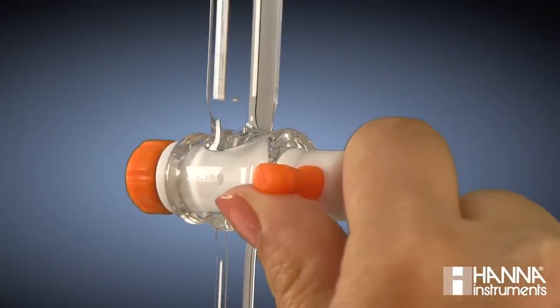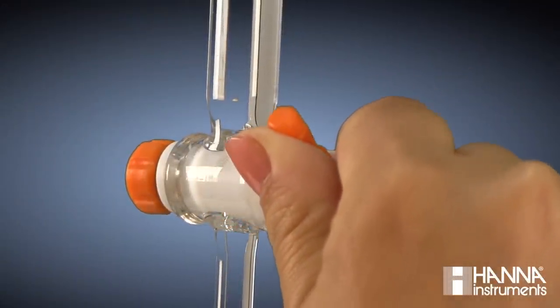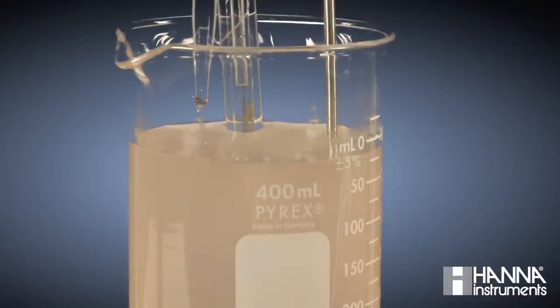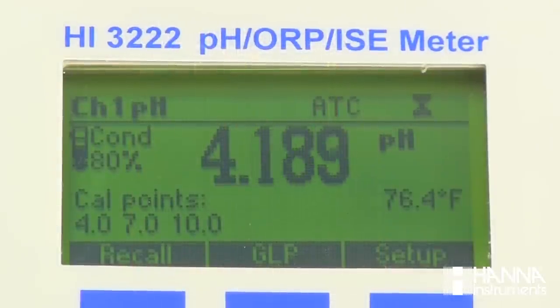Now, we can open the stopcock and begin dosing our titrant in the sample. Initially, as we add our titrant, we see that the solution remains colorless with each titrant dose, and our pH is changing relatively slowly, only in the hundredths for every drop added.